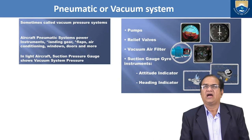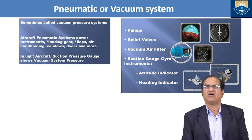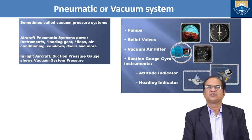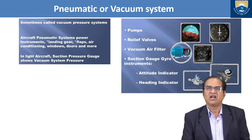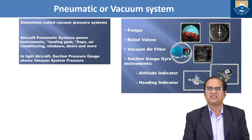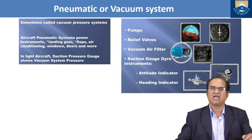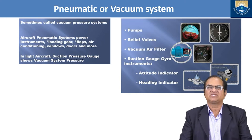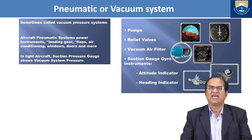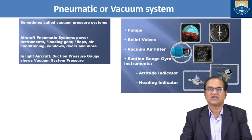Pneumatic is also called the vacuum system, sometimes called vacuum pressure system. The pneumatic system powers instruments, landing gear, flaps, air conditioning, windows, doors, and more. In light aircraft, suction pressure gauges show vacuum system pressure. These are the items which use the vacuum system.